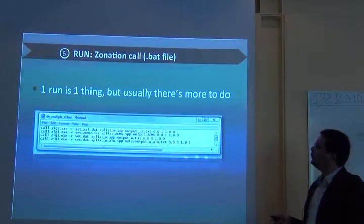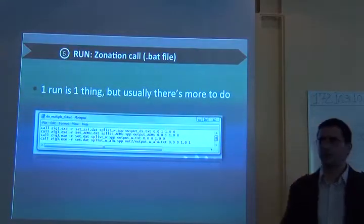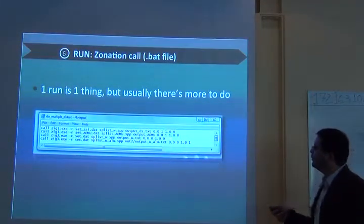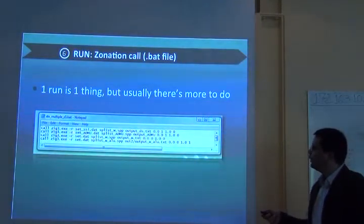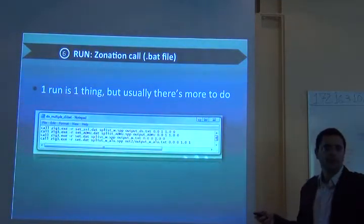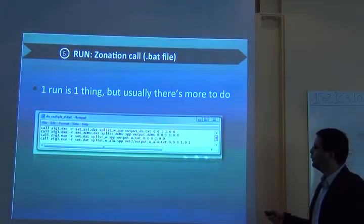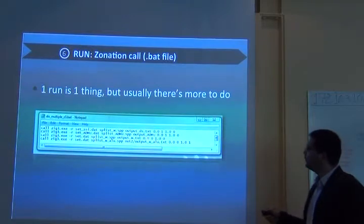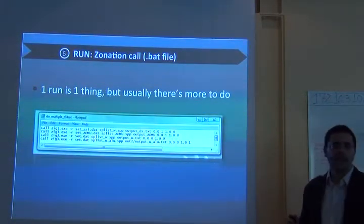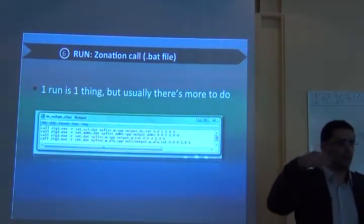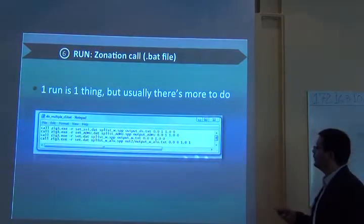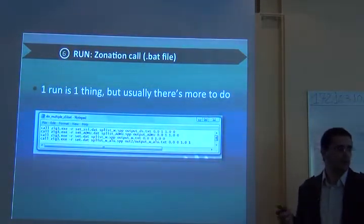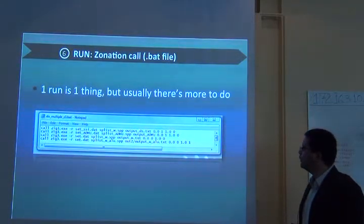In any case, one run is one thing. But you can do more analyses. So one of the good things of zonation is that you can have a file with different command lines. And each command line actually is one analysis. So you have pretty much the same. But then the settings file is different. It means that you are doing another analysis here. You could be using another species list file. And it's very important to remember that for each of these runs, you should have a different name for the output file. Otherwise, zonation will just override the previous one.